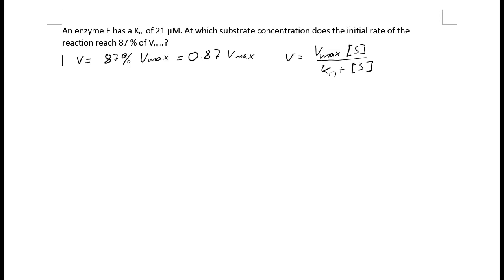We can write this with our value for the rate here. So we can write 0.87 times Vmax equals Vmax times the substrate concentration divided by Km plus the substrate concentration.